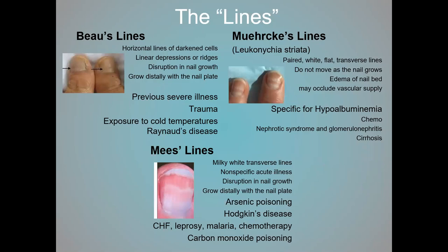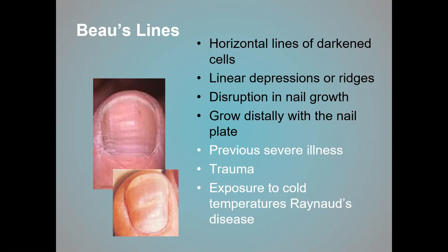That brings me to the lines. Horizontal lines usually represent changes in the nail's status at a given point in time — a disruption in nail growth. As time goes on, those lines move distally, growing out with the nail plate. The first type to mention is Beau's lines: horizontal lines that are dark linear depressions or ridges. They can be due to severe illness, trauma, or exposure to cold, and grow distally with the nail plate. By the time they appear at the nail's end, the individual has often resolved their systemic problem and no longer shows it at the proximal end.